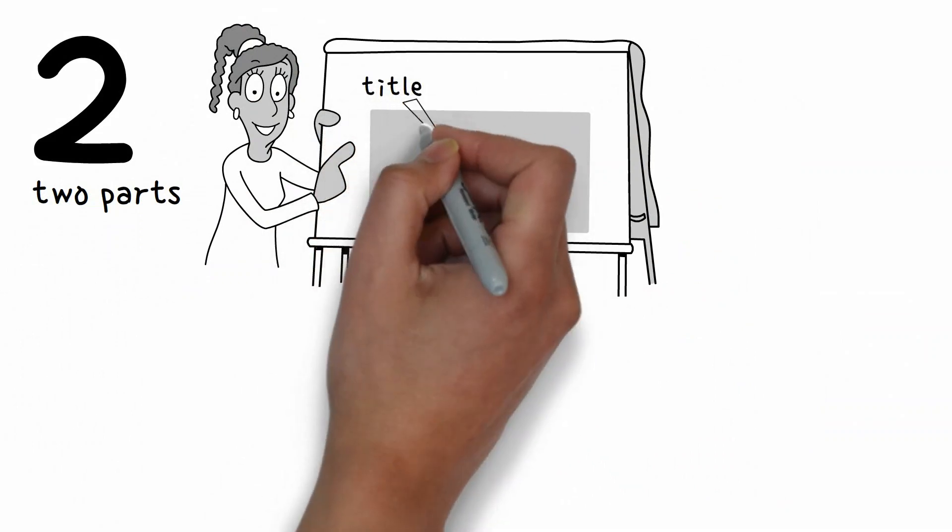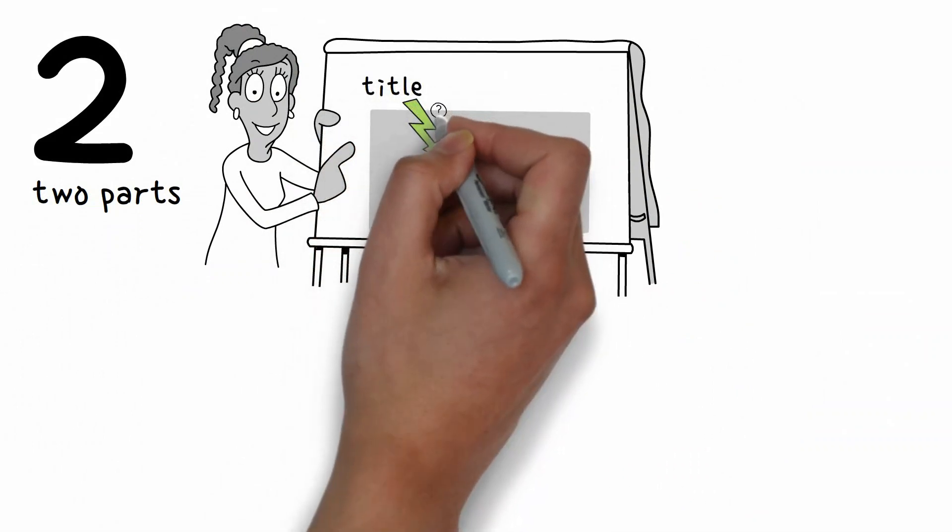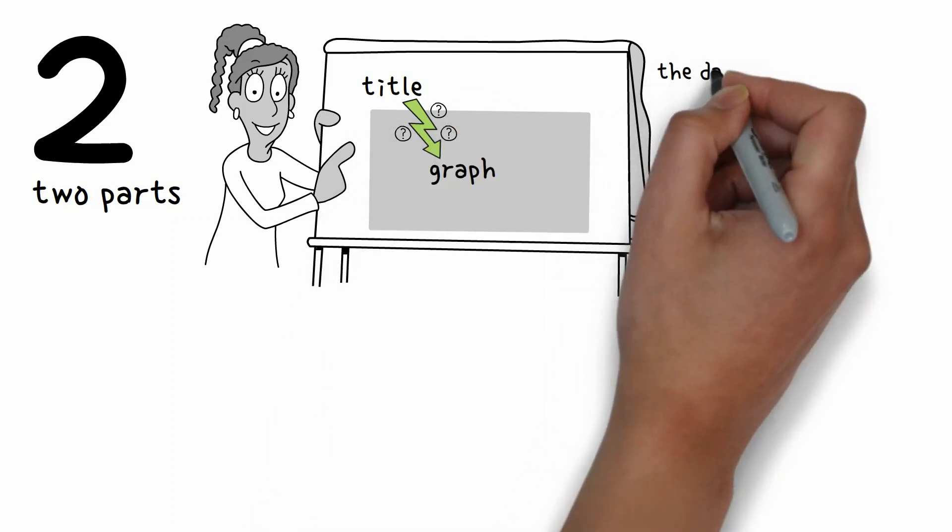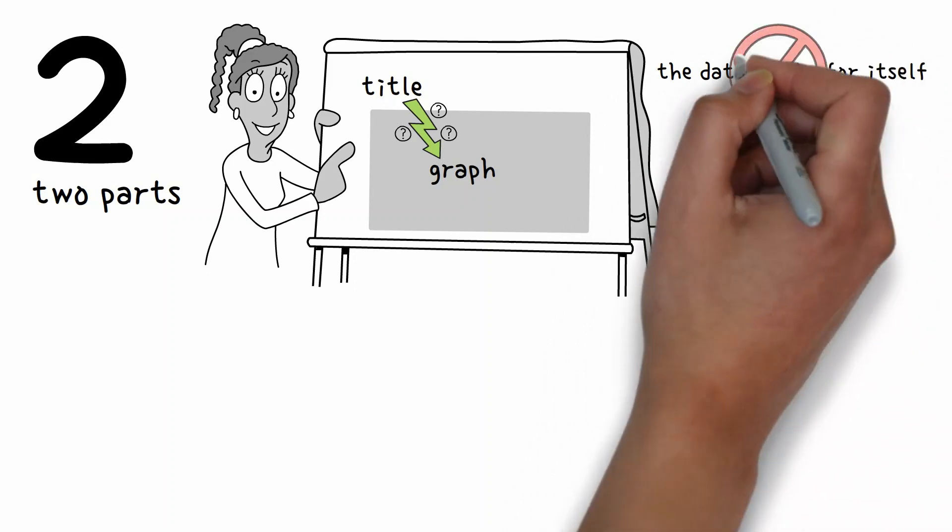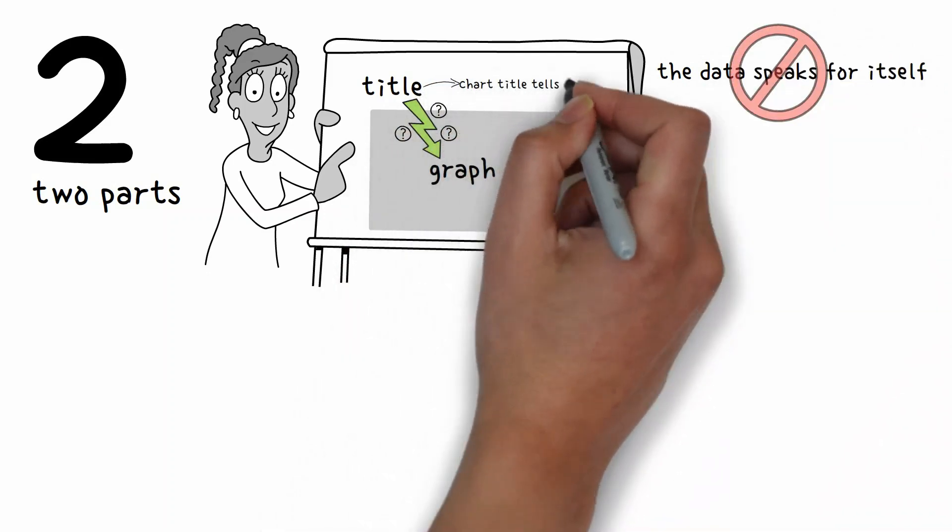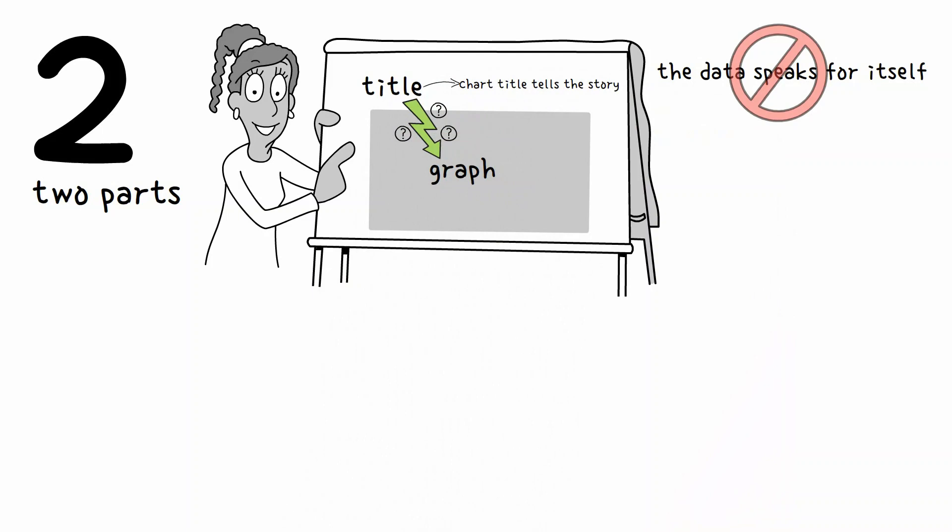Does your headline, the title, call out exactly what you're trying to say? I've heard many people say that the data speaks for itself, but nothing could be further from the truth. You need to speak for the data and ensure that your chart title also tells the story.